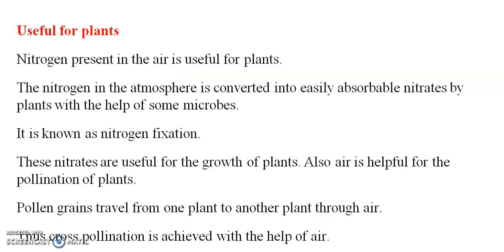Oxygen is useful for plants. Nitrogen present in air is useful for plants. The nitrogen in the atmosphere is converted into easily absorbable nitrates by plants with the help of some microbes. This is known as nitrogen fixation. These nitrates are useful for the growth of plants. Also, air is useful for pollination of plants. Pollen grains travel from one plant to another through air. This cross-pollination is achieved with the help of air.